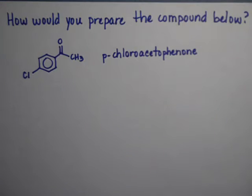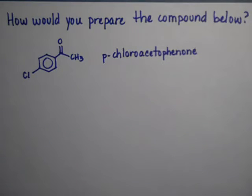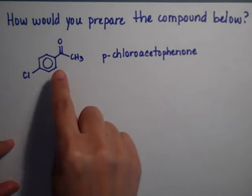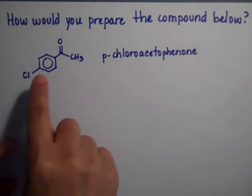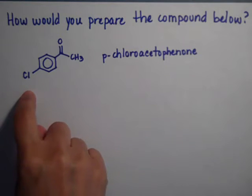In this problem we need to make the para-chloroacetophenone and we're going to start with benzene. So we need to find out what was on the ring first — was it the carbonyl or was it the chloride?